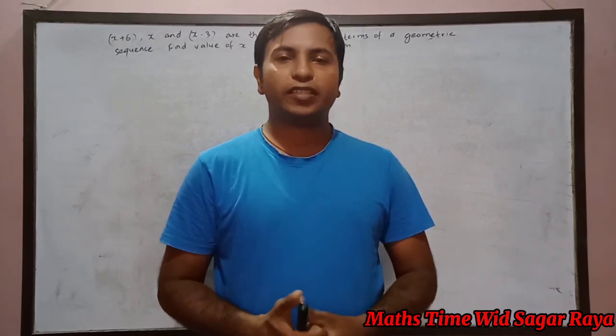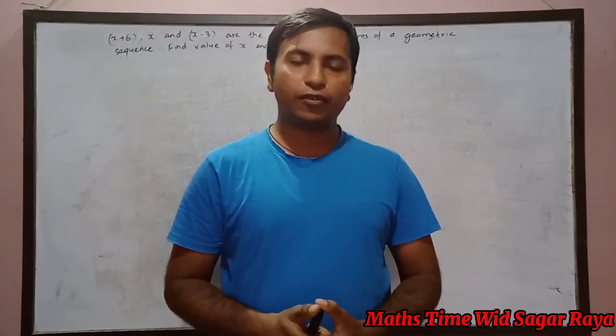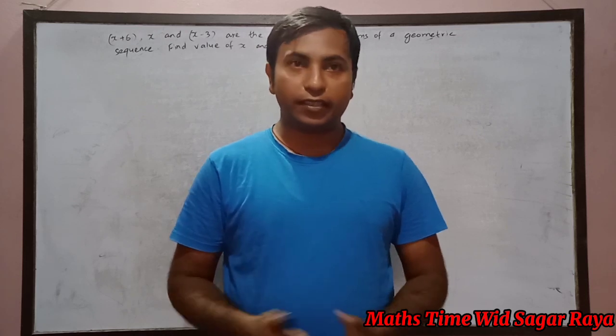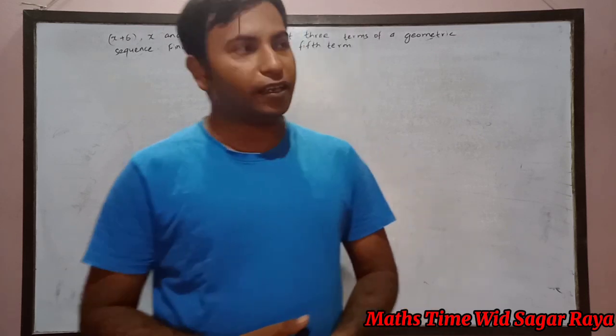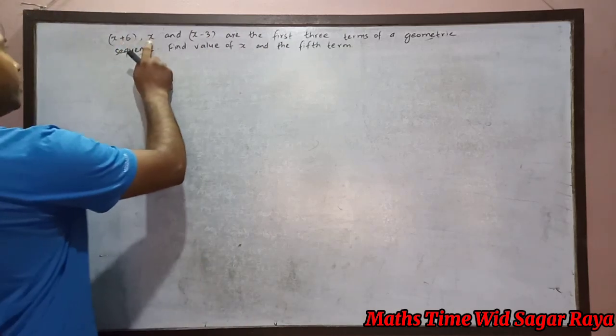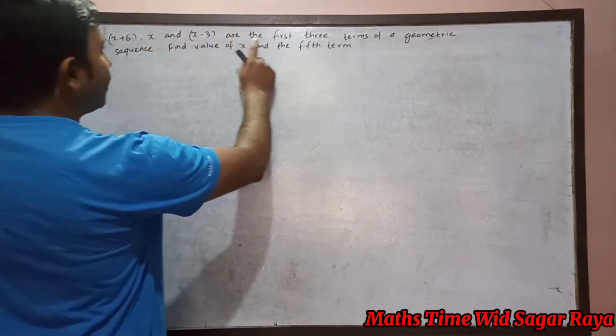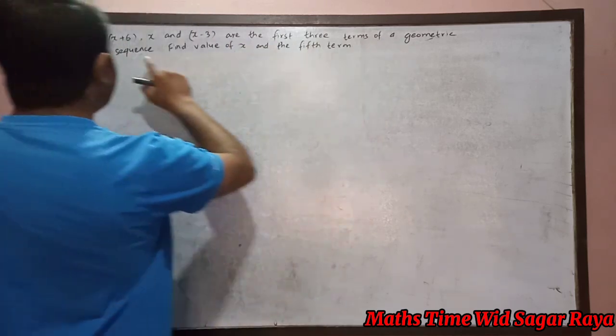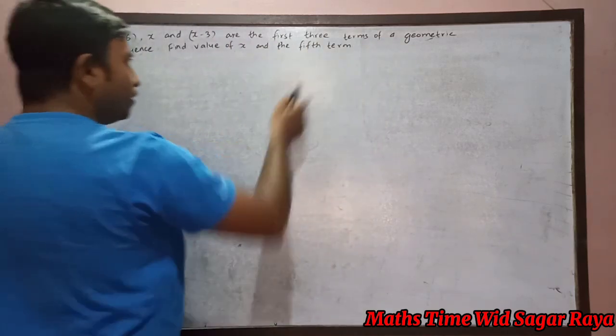Hello everyone, welcome to my channel Maths Time with Sagar Raya. Today I'm back with another question from sequential series. So without any delay, let's go through our question. The question is: x plus 6, x, and x minus 3 are the first three terms of a geometric sequence. Find the value of x and the fifth term.